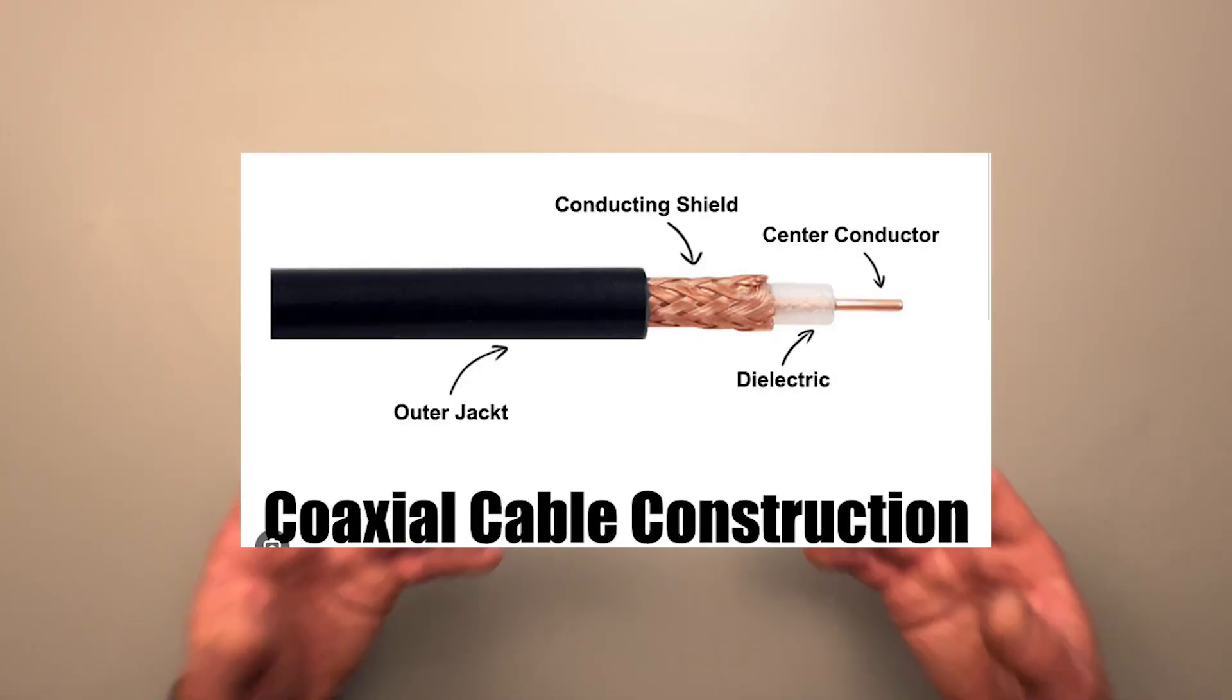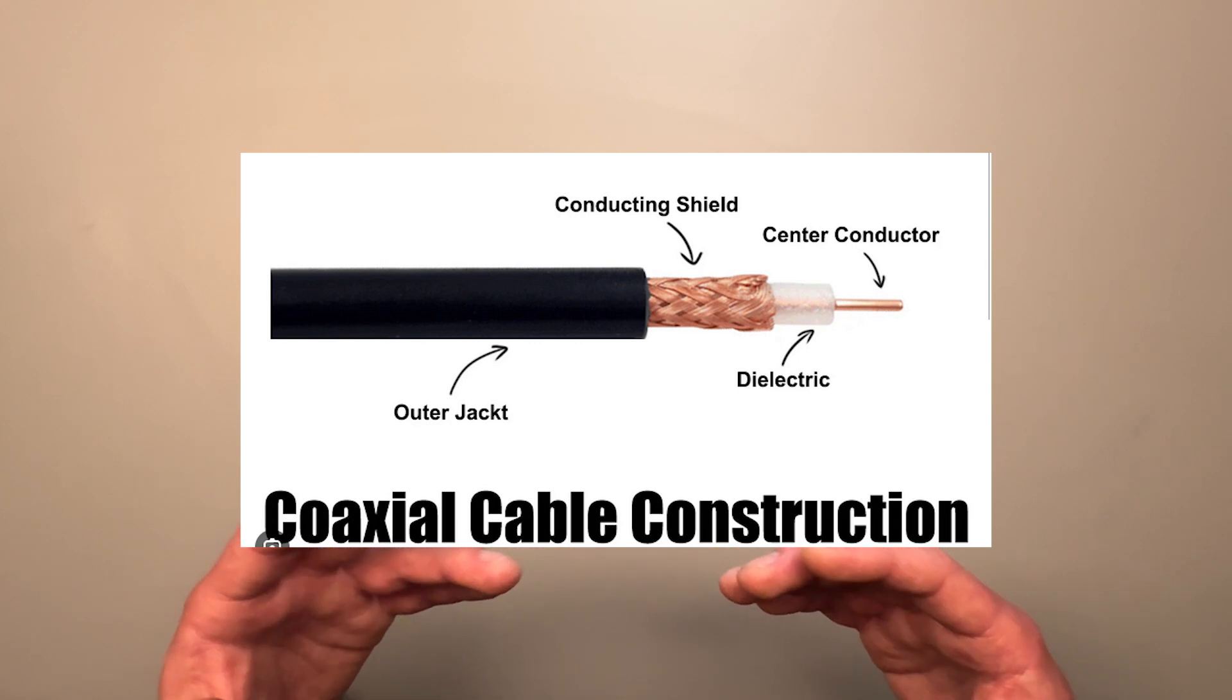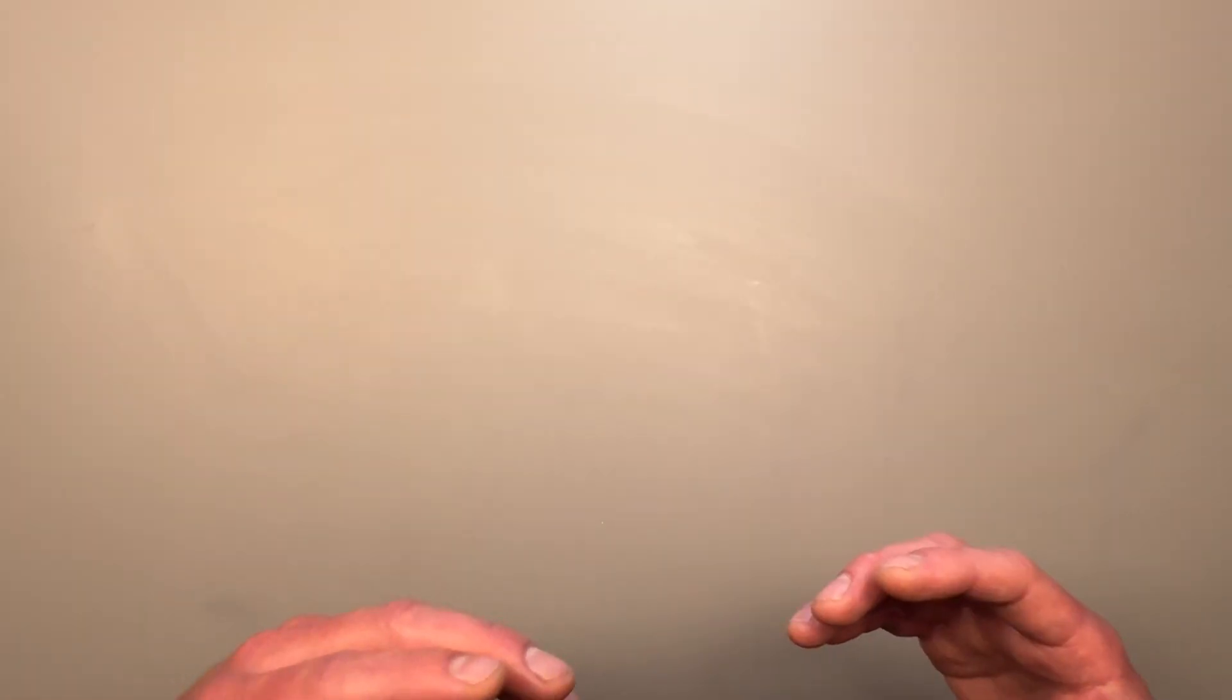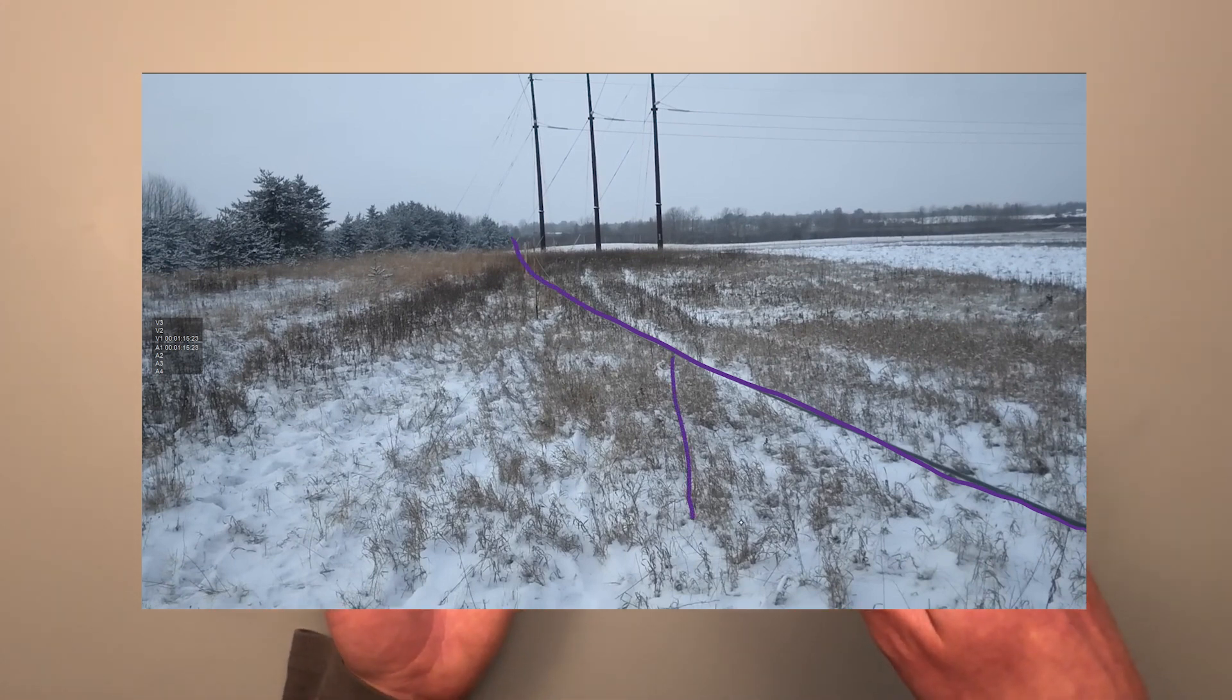He's strung 80 yards of coaxial cable running parallel to the high voltage lines. The fact that it's coaxial doesn't appear to have anything to do with his test other than I imagine that it's what he had available at the time. He had his coaxial cable elevated approximately four feet off the ground. I don't fully understand the reasoning behind this. My best guess is to ensure that the cable was completely isolated from earth.